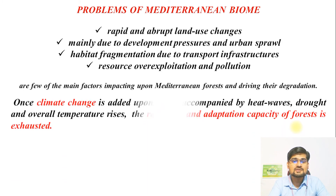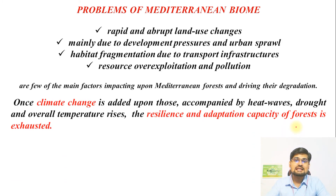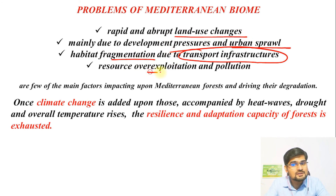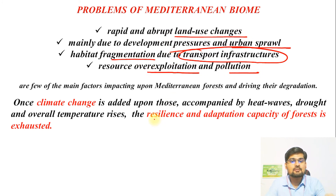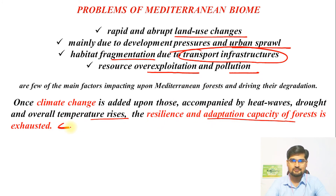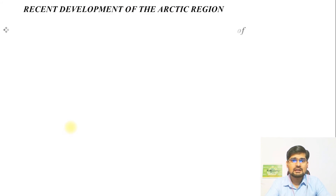In the Mediterranean region, similar problems arise: rapid and abrupt land use changes due to developmental pressure and urban sprawl, habitat fragmentation due to transport infrastructure, resource over-exploitation, and pollution. Climate change adds heat waves, drought, and overall temperature rise, gradually exhausting the resilience and adaptation capacity of forests in the Mediterranean biome.